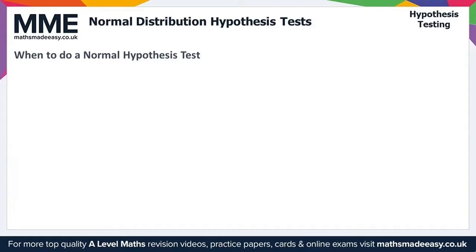In binomial hypothesis tests, you are testing the probability parameter p. However, in normal hypothesis tests, you are testing the mean parameter mu — that's the Greek letter mu.